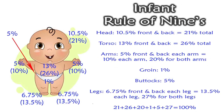Lastly, moving on to the infant Rule of Nines. The head is 10.5% on the front and 10.5% on the back, making the entire head 21%. The torso is 13% front, 13% back, for a total of 26%. The arms are 5% on the front and 5% on the back of each arm; the entire arm is 10%, and both arms is 20%. The groin is 1%, and we also add the buttocks on an infant — that's where this red arrow is pointing — and the buttocks itself is 5%. The legs for an infant are 6.75% for the front and 6.75% for the back, totaling 13.5% per leg, and both legs being 27%. Adding it all up — 21 plus 26 plus 20 plus 1 plus 5 plus 27 — you get 100%.